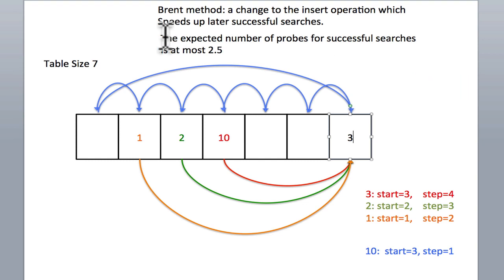So the thing that we know in general is that the expected number of probes for successful searches when you use Brent method is at most 2.5.